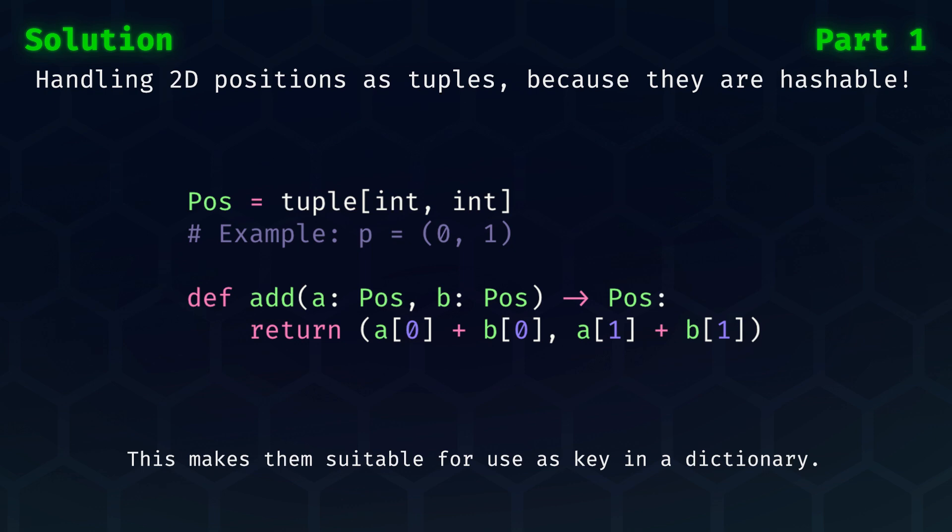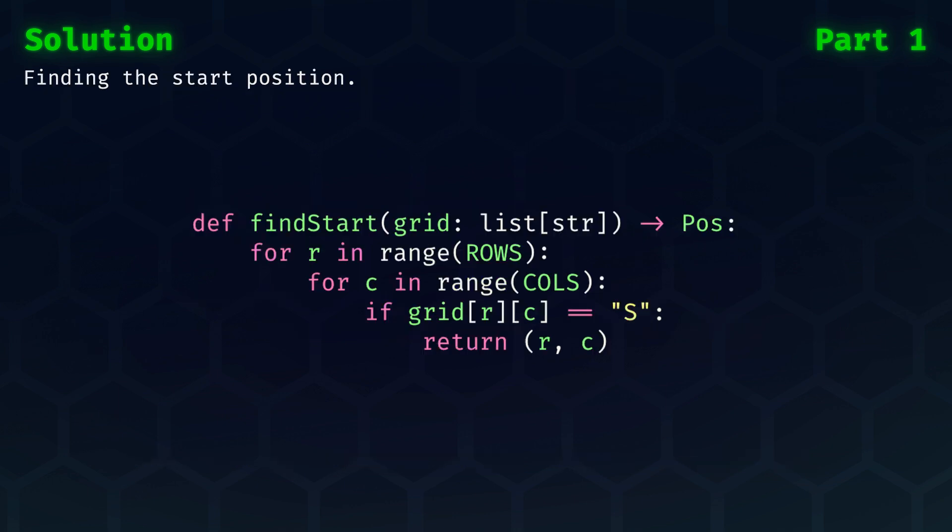A good convenience function to have is to be able to add two positions together. Next up, a trivial sub-problem, finding the start position. Here, we just loop over the grid and we return the position at which it is found.